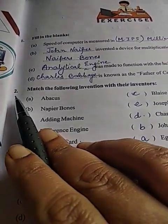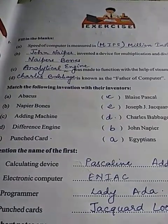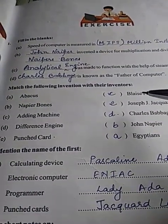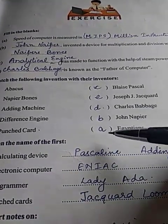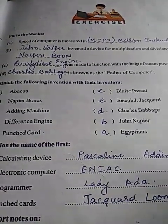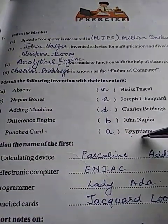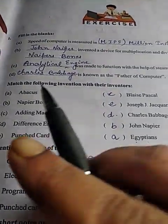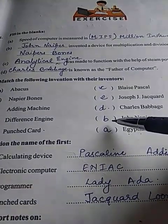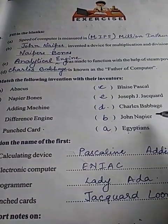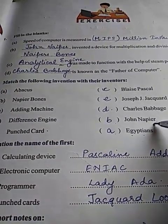Come to question number 2: match the following. You have to match the following with their inventors. Abacus was invented by Egyptians — no particular person is nominated, only that Abacus was invented by Egyptians. Napier's Bones was invented by John Napier.